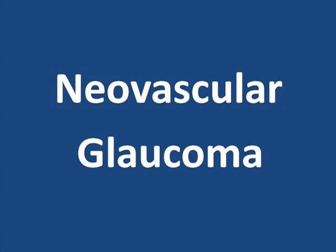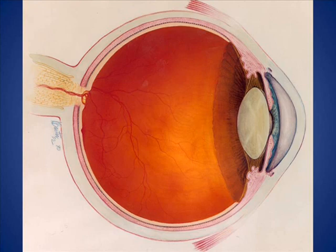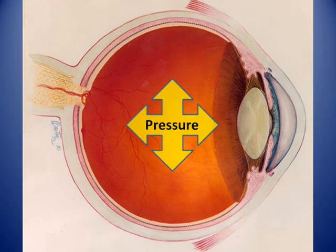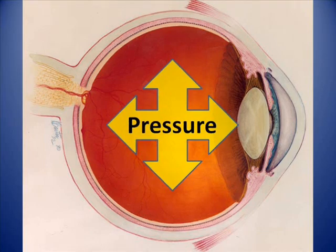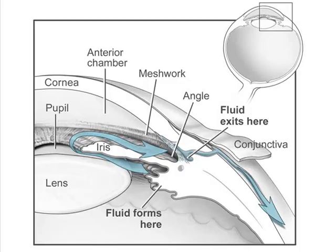One of the most serious eye complications that may follow the development of neovascularization is a condition called neovascular glaucoma. Neovascular glaucoma is characterized by higher than normal pressure within the eye, which can be very painful as well as damaging to vision. To see how this pressure develops, let's take a look at an illustration of the front of the eye. The front part of the eye is filled with a clear water-like fluid called the aqueous fluid, which delivers nutrients to structures at the front of the eye. This fluid is found in the anterior chamber of the eye, shown here in yellow, the space between the iris and the cornea.